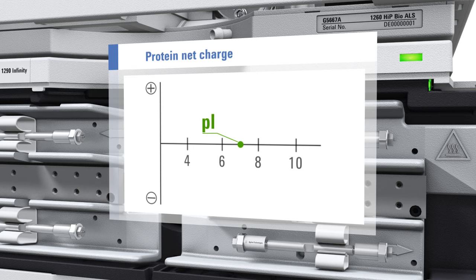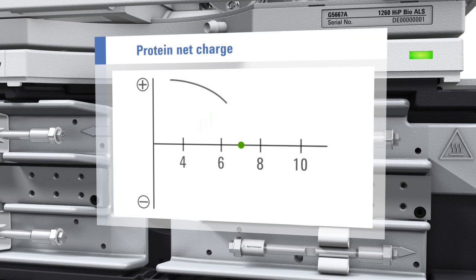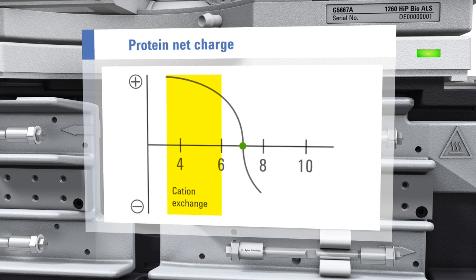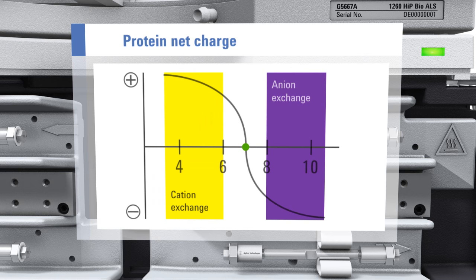Let us now take a look at a hypothetical protein with an isoelectric point, or PI, of 7. In a buffer solution of pH below 7, the protein's surface charge is more positive. And in a buffer with pH higher than 7, the surface charge is more negative.